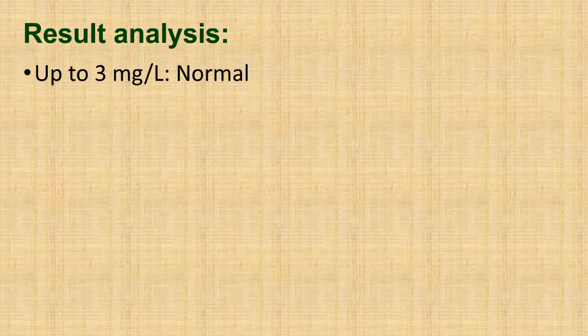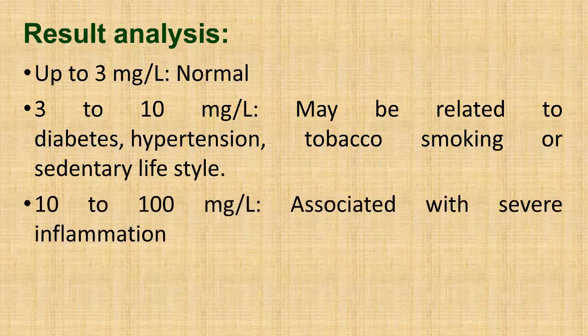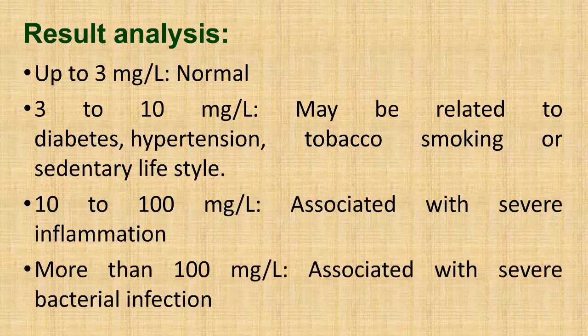Result Analysis: Up to 3 mg per liter is considered normal. 3–10 mg per liter may be related to diabetes, hypertension, tobacco smoking, or sedentary lifestyle. 10–100 mg per liter is associated with severe inflammation. More than 100 mg per liter is associated with severe bacterial infection.